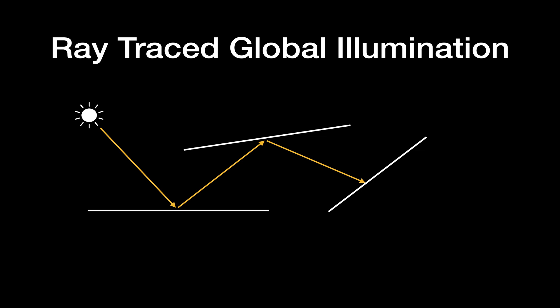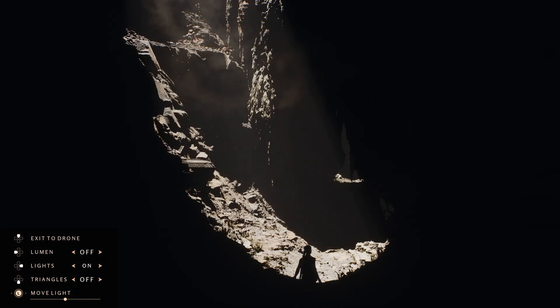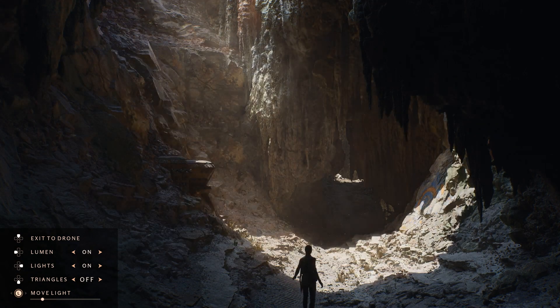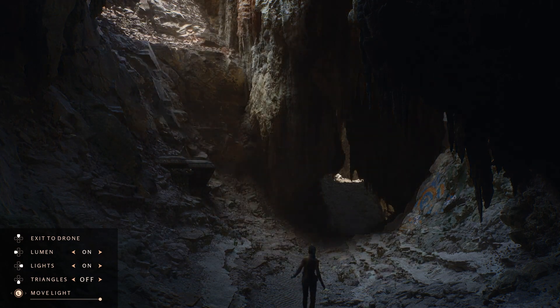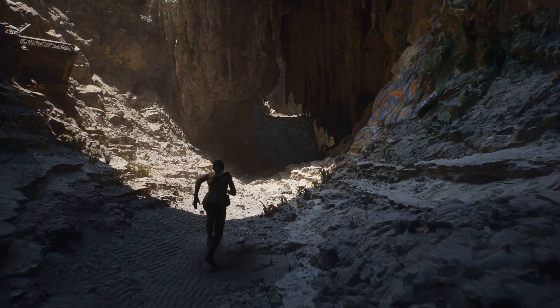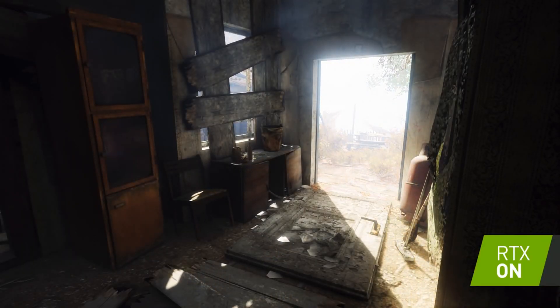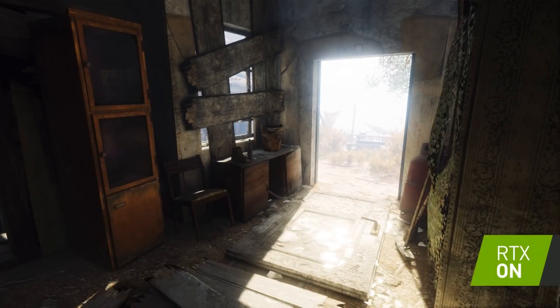Global illumination calculates how light bounces through the scene. Areas that are not directly lit still receive some light because of the bounces. For every bounce, the light loses some energy and takes on the color of the surface it hits. This is pretty expensive to do with ray tracing. Unreal is currently working on a new system called Lumen for Unreal Engine 5 — Lumen will be completely dynamic and calculate global illumination in real time. Ray traced global illumination is currently used in games such as Metro Exodus.